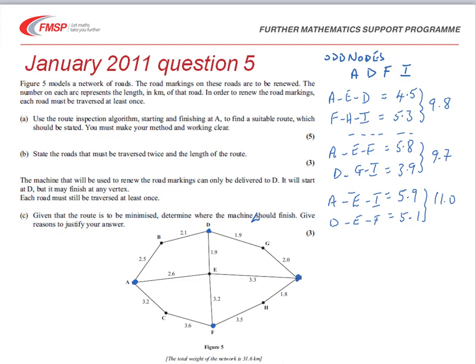We want the least weighted pair. So there we are, we link A to F and D to I. It's worth putting that onto the diagram. So A to F via E, and D to I via G.